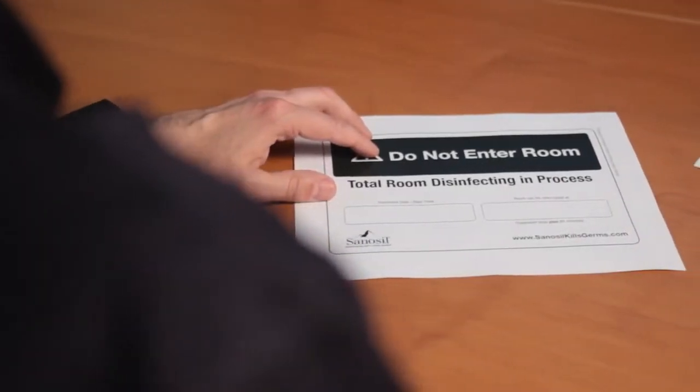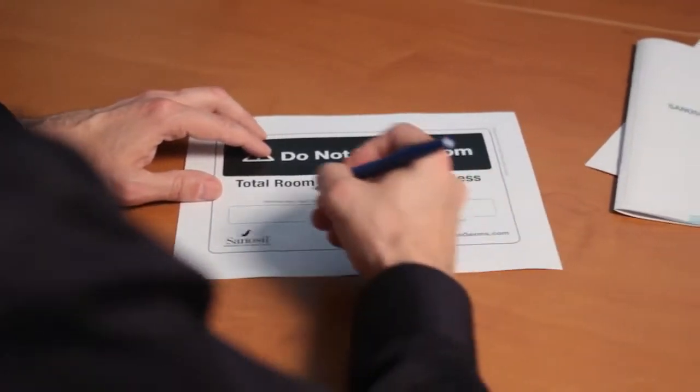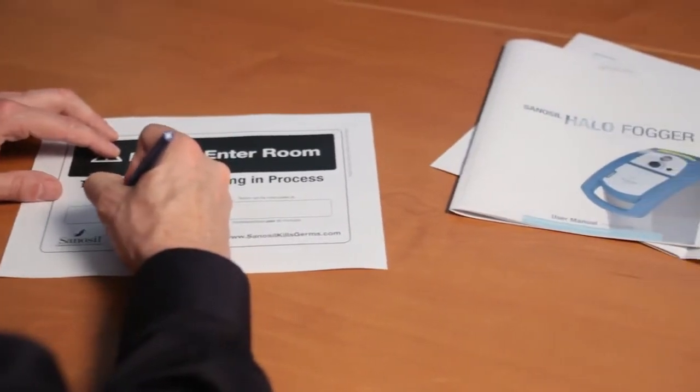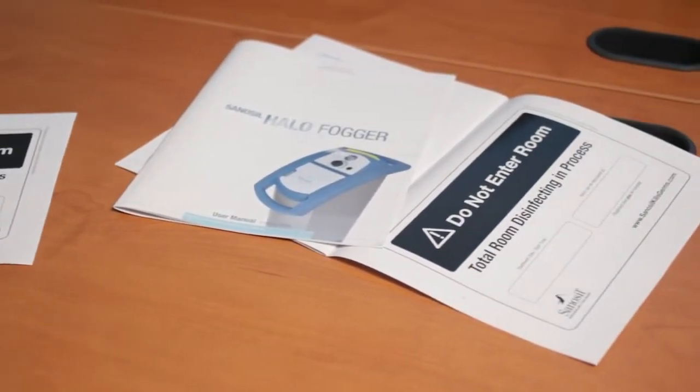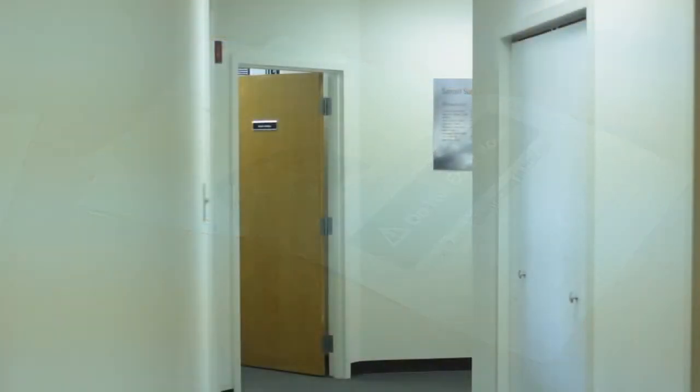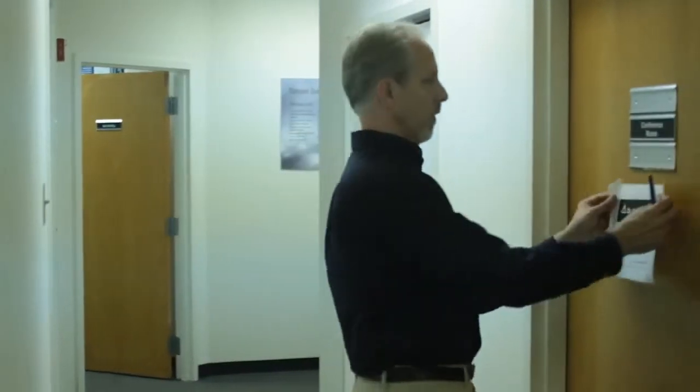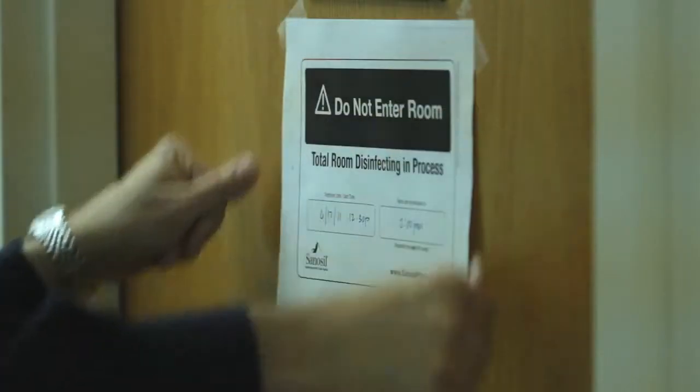Sanosil recommends a sign be posted outside the room being treated to inform others that a disinfecting procedure is in progress and that it is not safe to enter the room until the treatment cycle is complete. Sanosil has included signed artwork in the Halo Fogger user manual. Just fill in the blanks and post on the door.